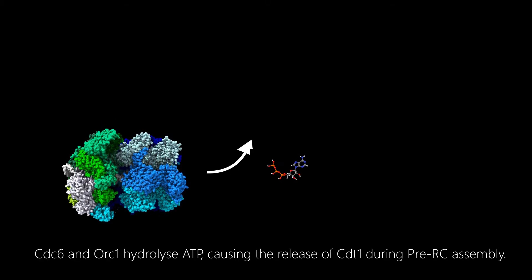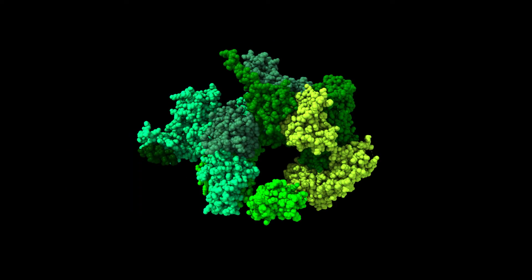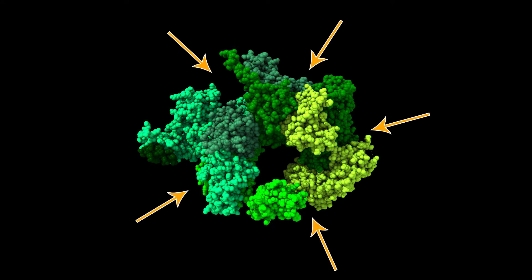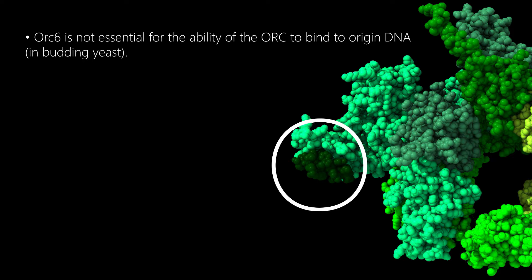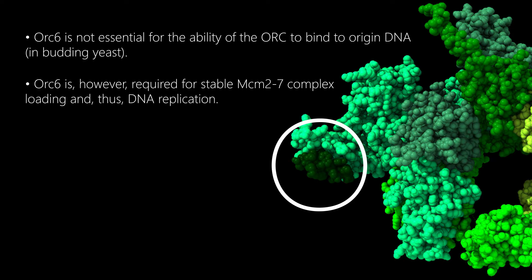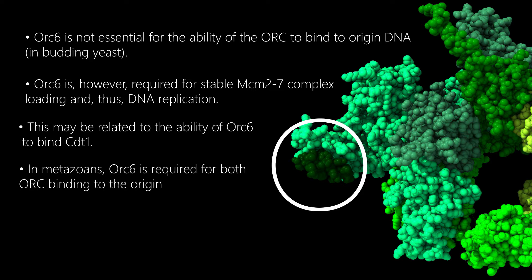Along with CDC6, ORC1 hydrolyzes ATP, which causes the release of CDT1 during pre-replication complex assembly. The ORC1 to 5 subunits acquire functionality by forming a complex, with their ATP binding pockets participating at the interface between subunits. ORC6 is not essential for ORC DNA binding in yeast; however, it is required for stable MCM complex loading and DNA replication, which may be related to the ability of ORC6 to bind to CDT1. In metazoans, ORC6 is required for both ORC binding as well as replication.